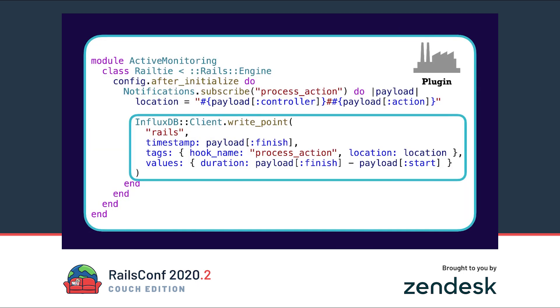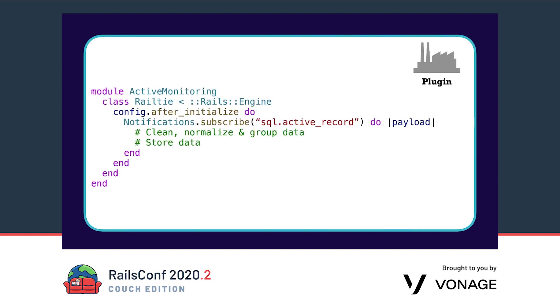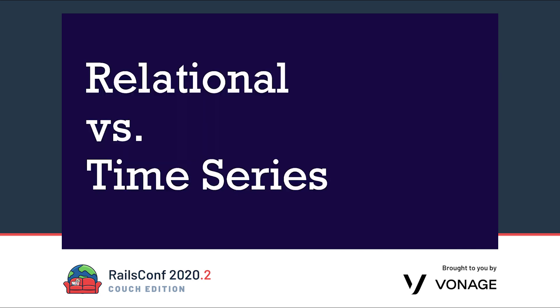With this knowledge we can now write the request metric to our InfluxDB: we take the timestamp, calculate the tags — the hook name and location — and calculate the value which is finish time minus start time. We also want to monitor SQL queries, but before we can do that we first need to clean, normalize, and group the payload we receive. In this chapter we had a look at the data structure of our metrics and decided to use a time series database like InfluxDB.